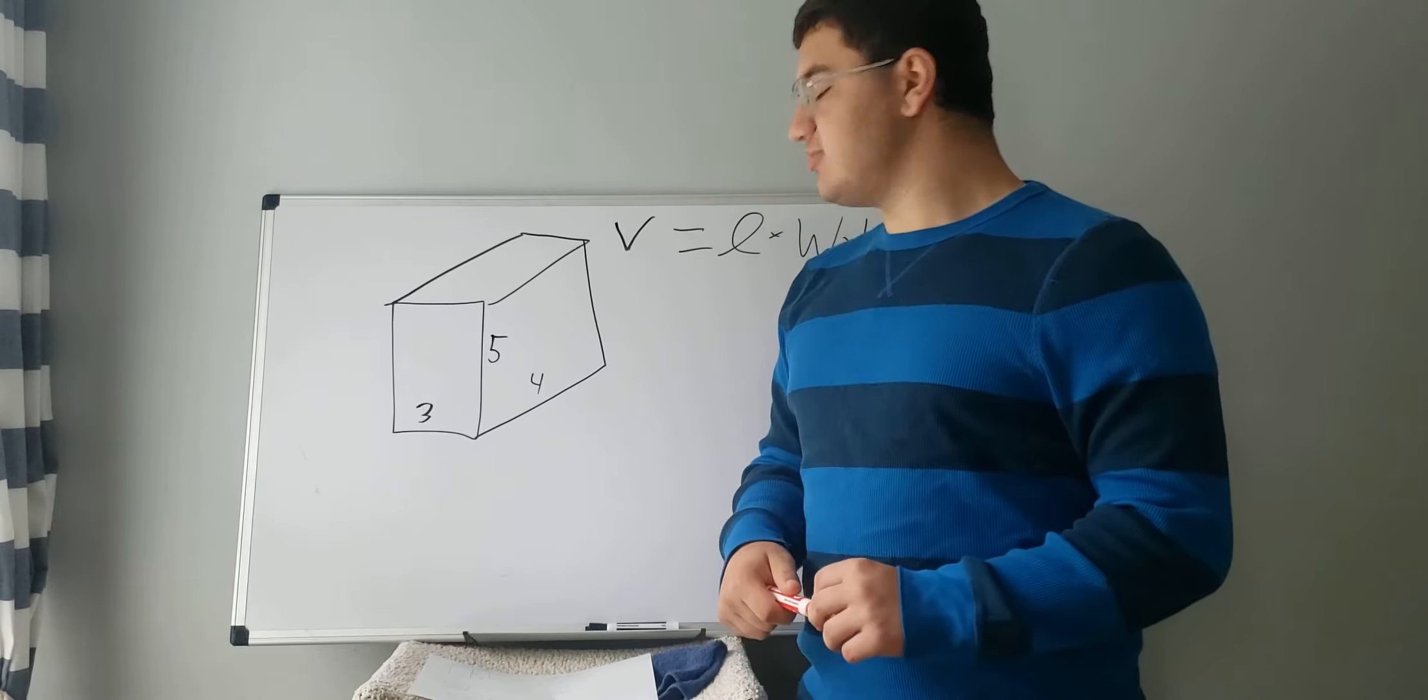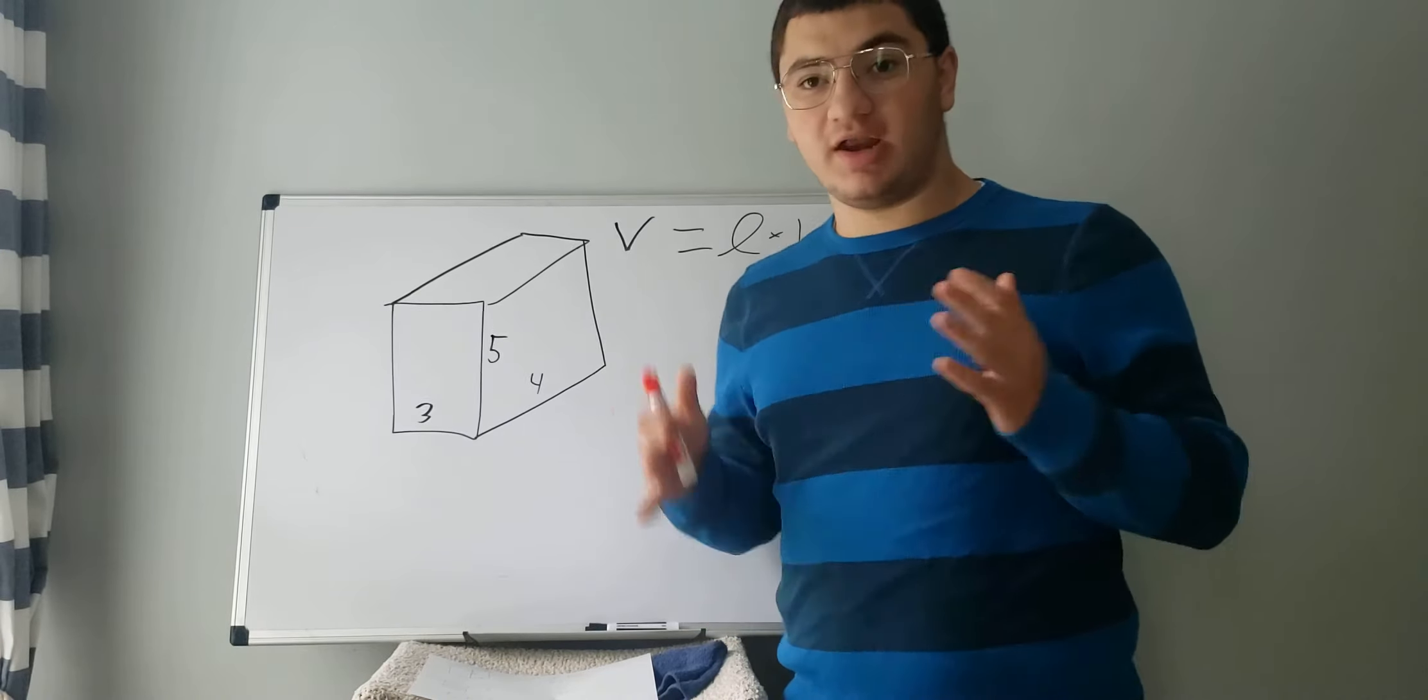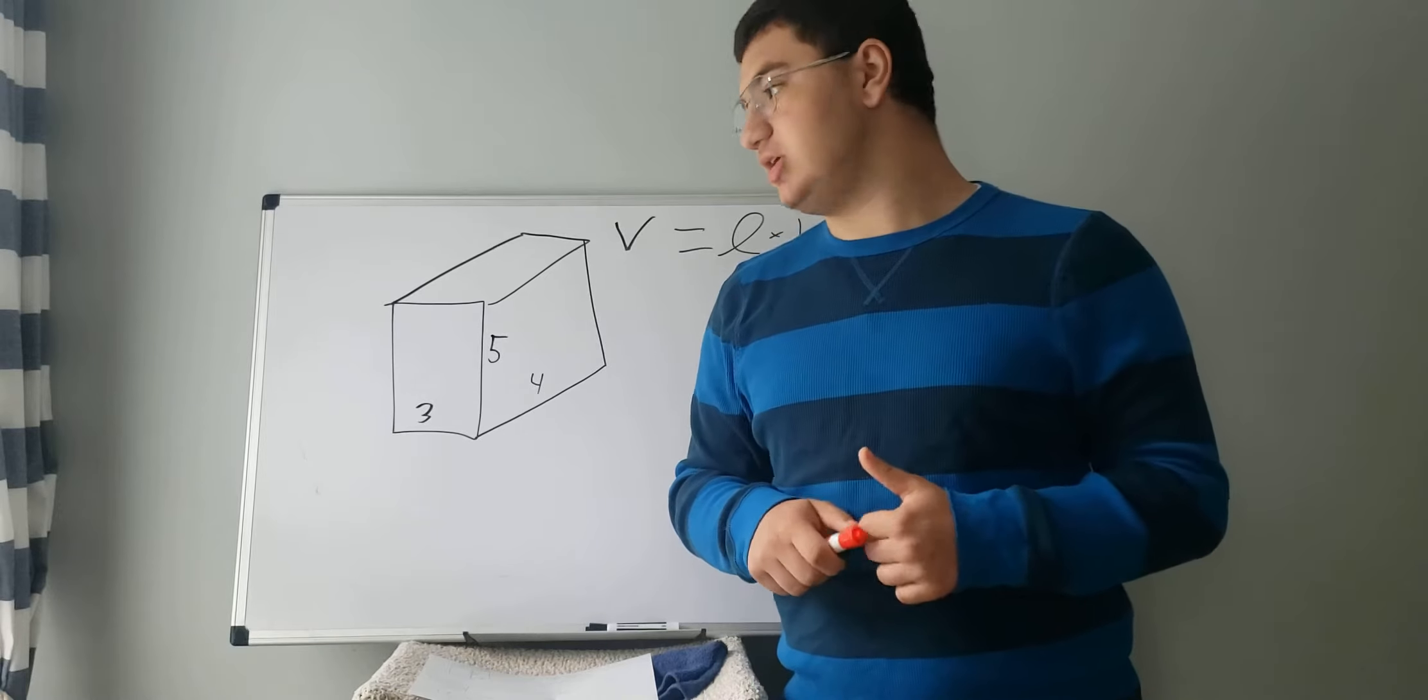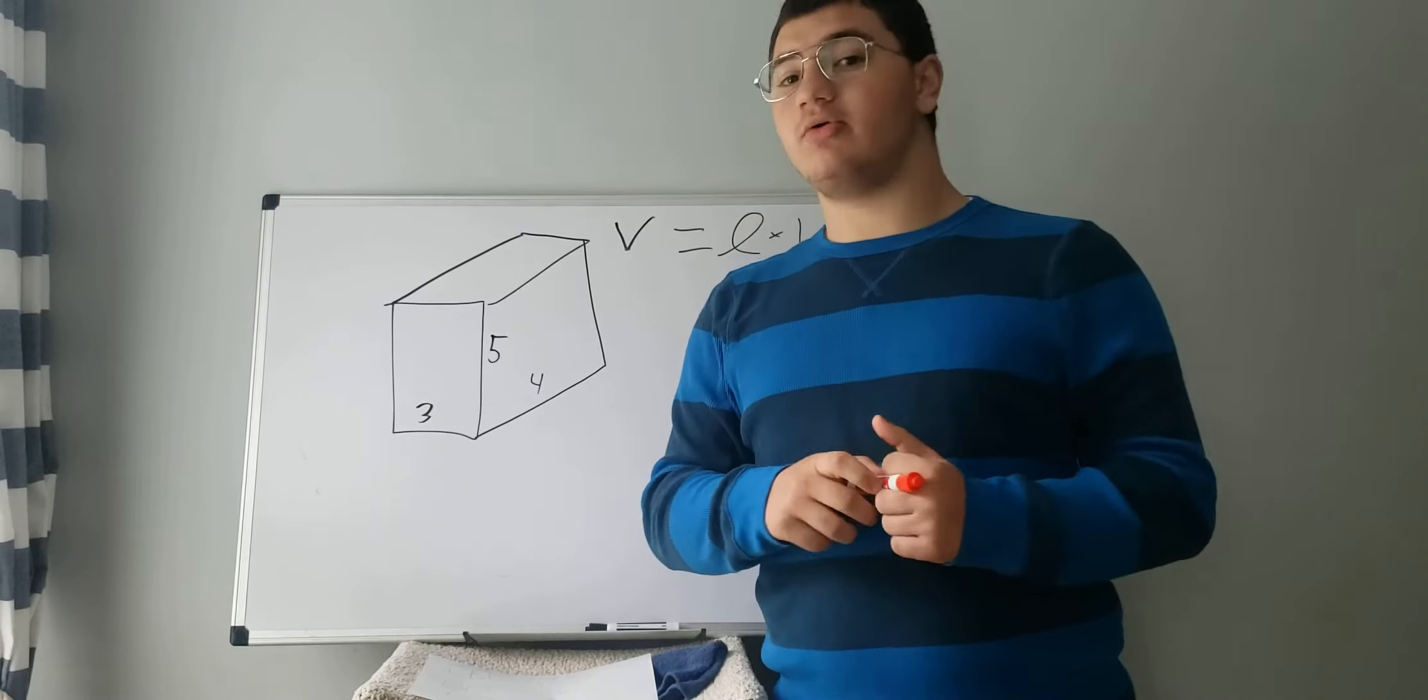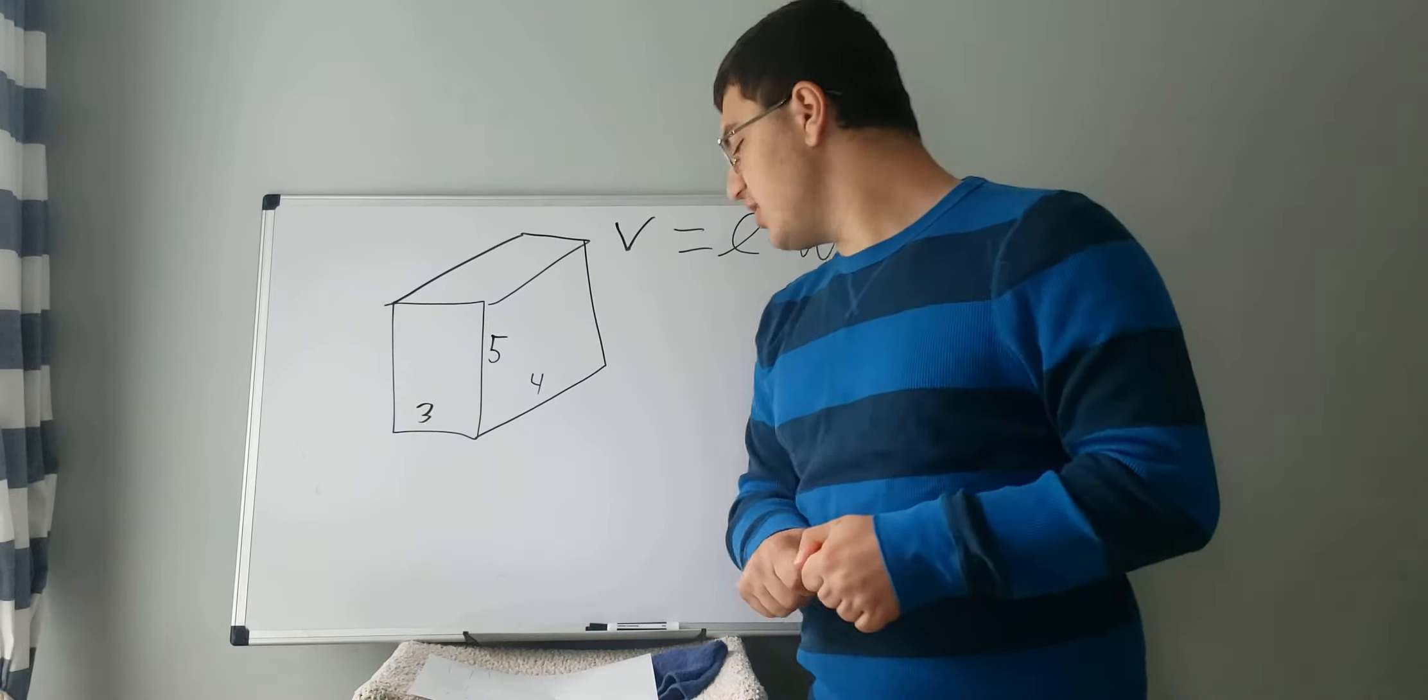A rectangular prism is what essentially a box is. If you ever buy anything off Amazon or something, you get it in a box, right? And the box is usually either a cube or a rectangular prism or sometimes a circle.